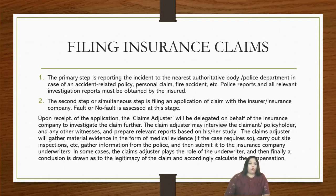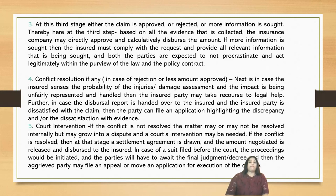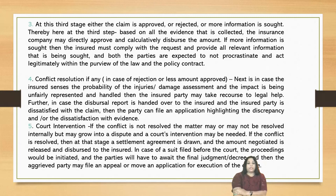In some cases, the claims adjuster plays the role of the underwriter, and then finally a conclusion is drawn as to the legitimacy of the claim and accordingly the compensation is calculated. After all the material evidence is gathered by the insurance company through the claims adjuster or the underwriting team, either the claim is approved, rejected, or more information is sought. Based on all the evidence collected, the insurance company may directly approve and disburse the amount. If more information is sought, the insured must comply and provide all relevant information, and both parties are expected to act legitimately within the purview of the law and the policy of the contract.